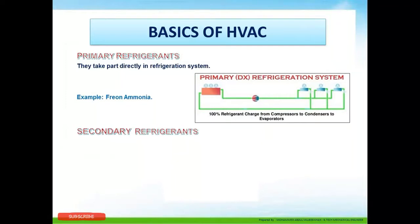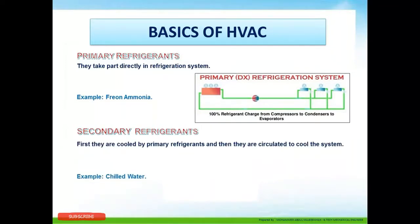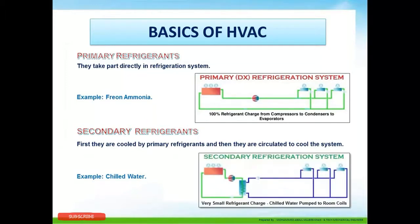The secondary refrigerant is first cooled by the primary refrigerant and then circulated to cool the system - an example is chilled water. As seen in the diagram, the primary refrigerant loop is on the left-hand side and the secondary refrigerant, which is water, is on the right-hand side. When primary refrigerant cooling happens in the evaporator, that cooling is carried forward through the secondary refrigerant (water) to different parts of the HVAC building system.